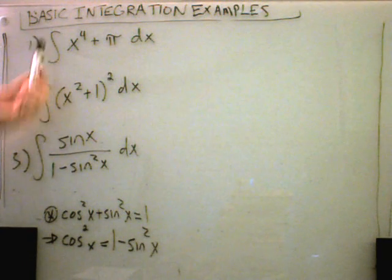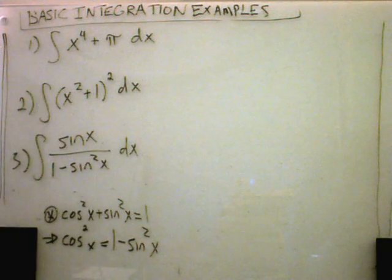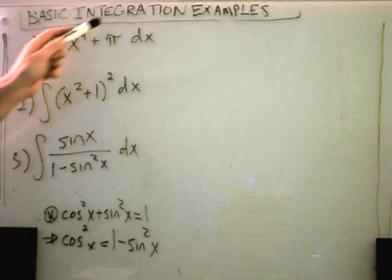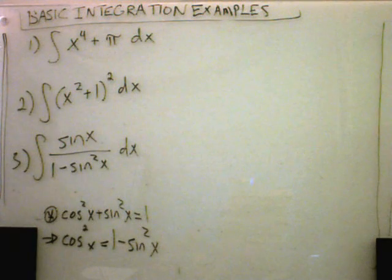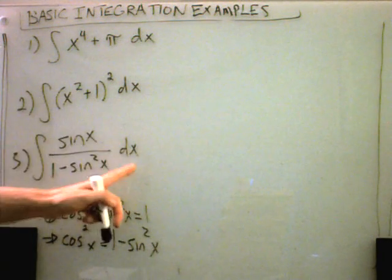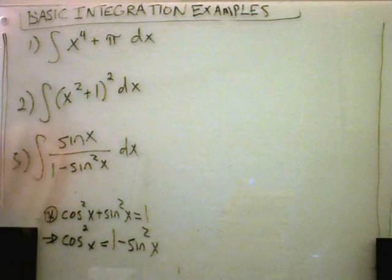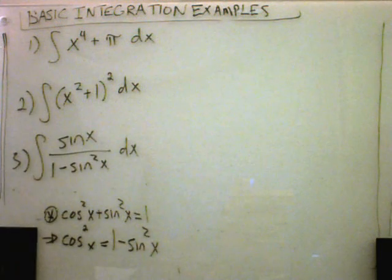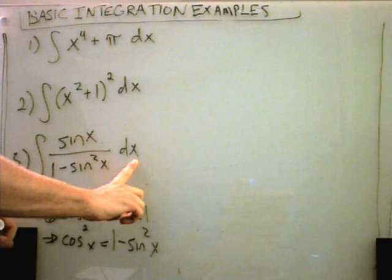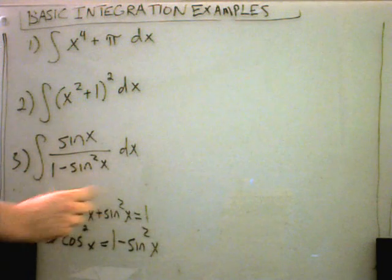Our first example, and again the notation, the little elongated S, basically means just find a general antiderivative of whatever's to the right. Think about the dx as being some symbol that is in all the integral problems as well. For now, just don't really assign it any meaning, just think it's part of the notation that says hey find an antiderivative of what's inside there.